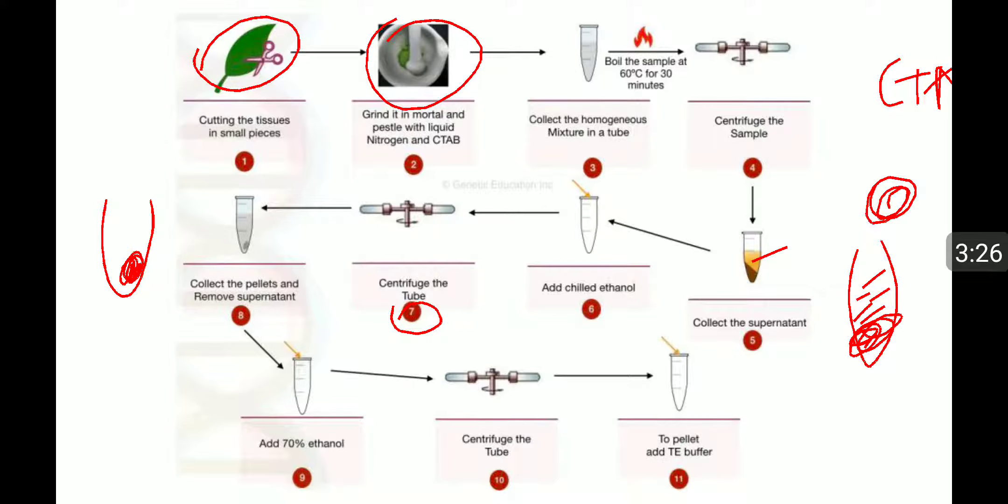We have to collect these pellets and remove the supernatant. For this, we have to add 70% ethanol and centrifuge the pellet. After that, add TE buffer to that solution for the storage purpose. This is the brief procedure for extraction of DNA.